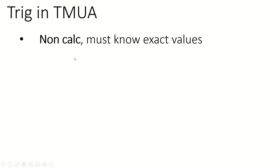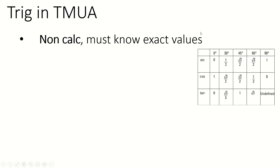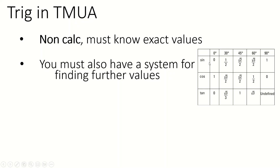Firstly, they're both obviously non-calculated papers so you must know your exact values. Here's the exact value table — these are the ones you'd be expected to know, except you must also be able to extend these values further down the line. You'd need to know what sine of 150 is, for example, or cos of 240 or whatever. So you need to have some kind of system for that.